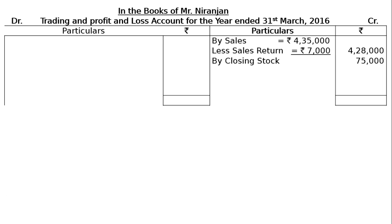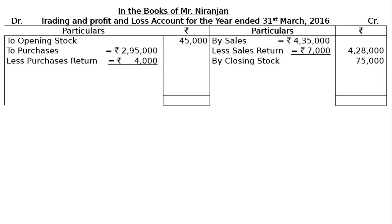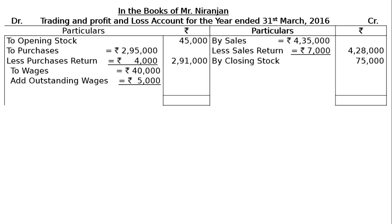On the debit side we have: opening stock Rs 45,000; purchases Rs 2,95,000 less purchases return Rs 4,000, giving net purchases of Rs 2,91,000 in the final column. Next, factory expenses — wages Rs 40,000, plus outstanding wages from adjustment 3, Rs 5,000. This increases the wages amount, so we add outstanding wages Rs 5,000, giving Rs 45,000 in the final column on the trading account debit side.